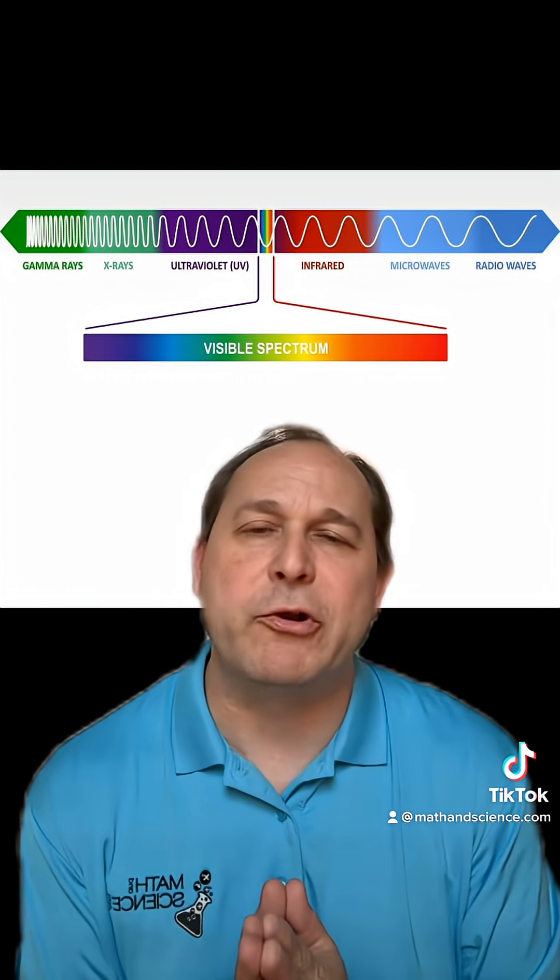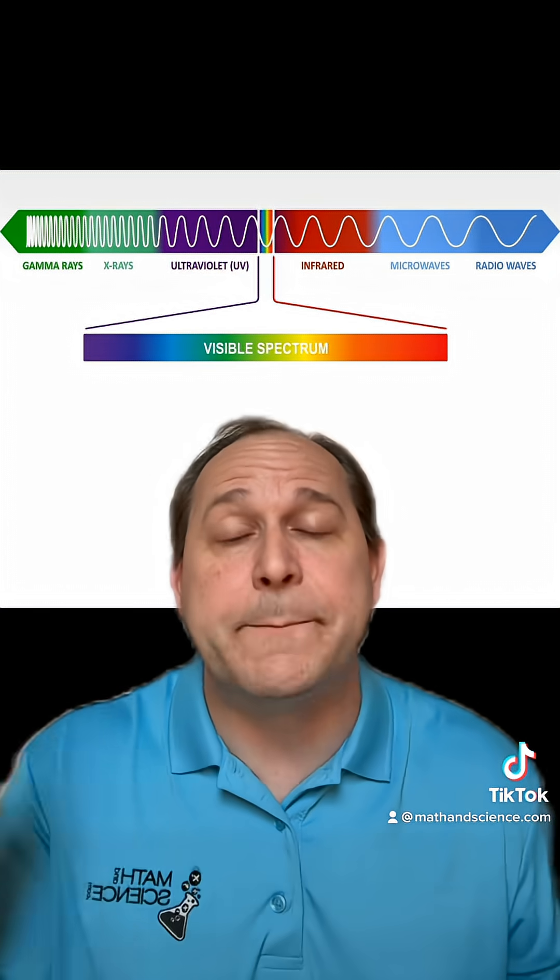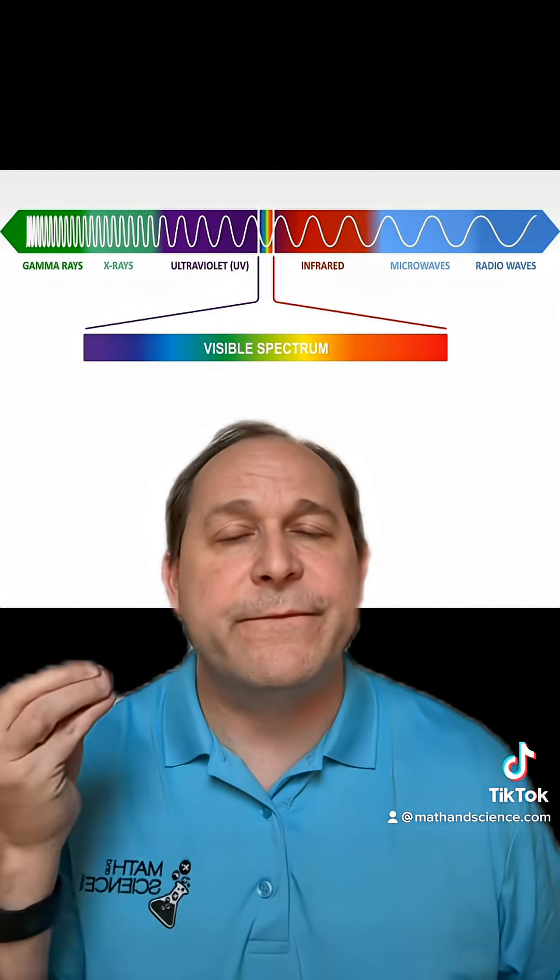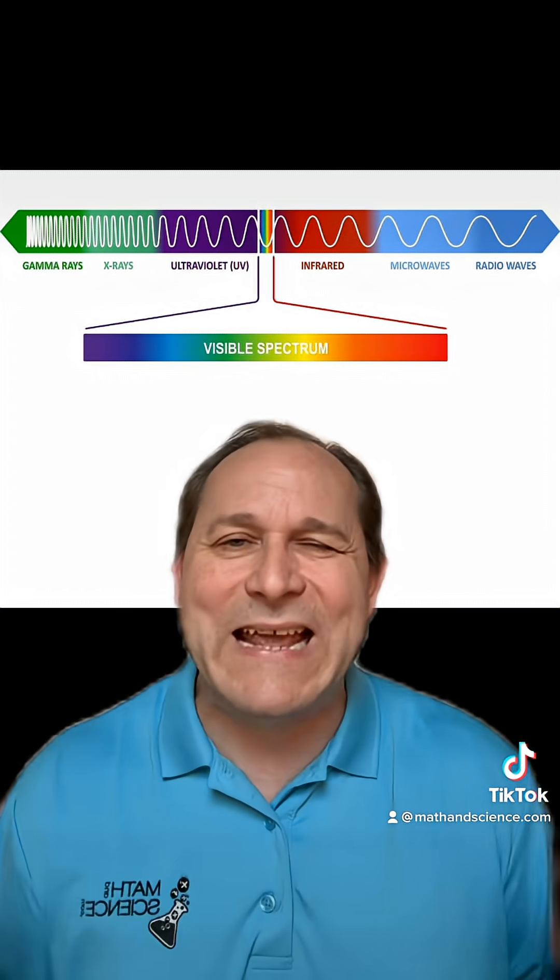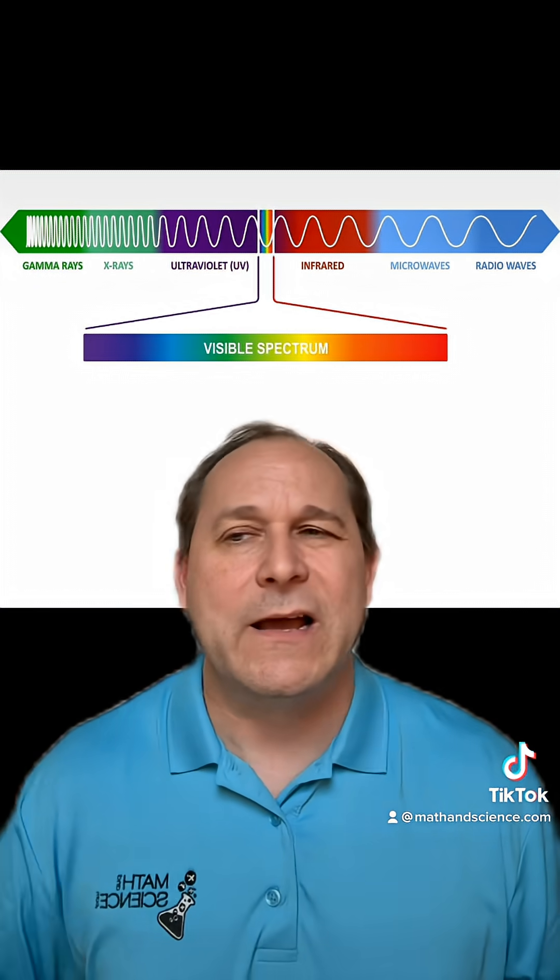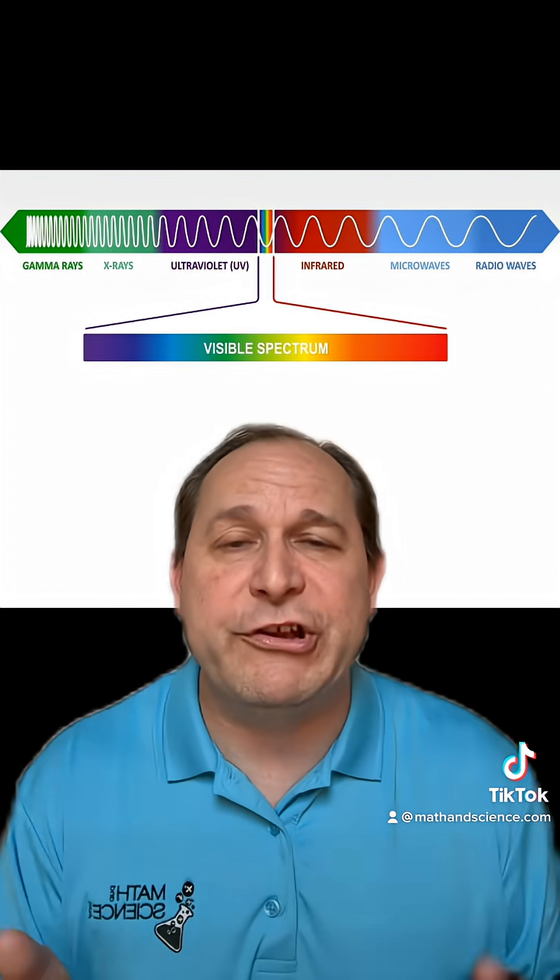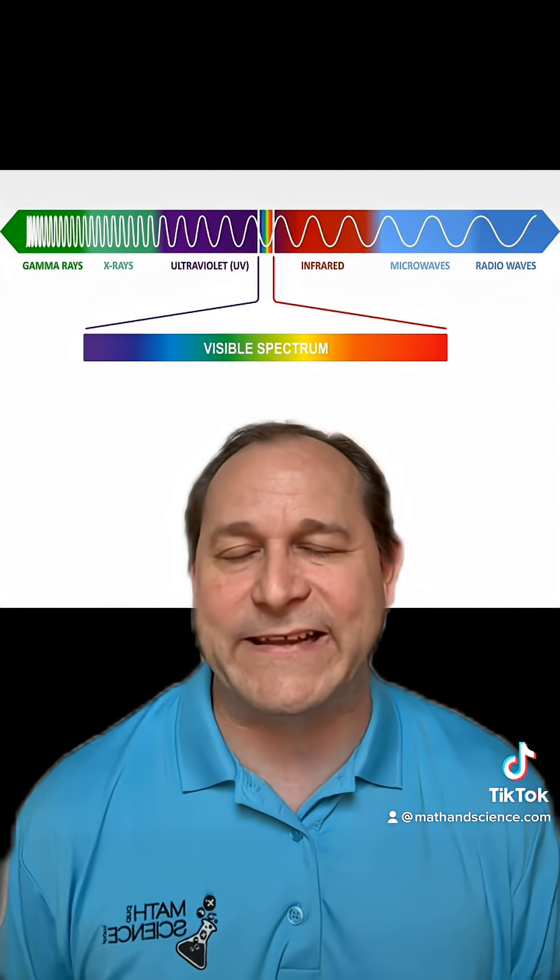The executive summary here is that in order to break a bond in your DNA and give you a mutation, then a photon would have to have an individual energy of somewhere around 10 electron volts. Electron volt is just a unit of energy we use for photons because it's convenient at that scale.